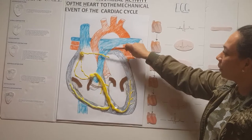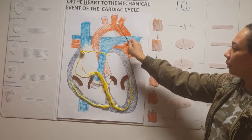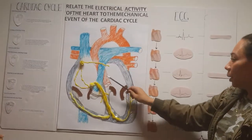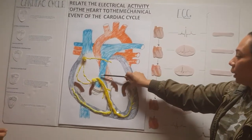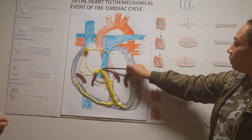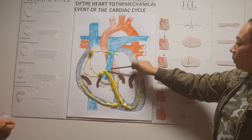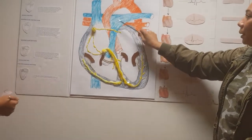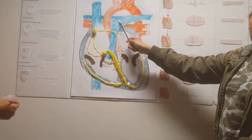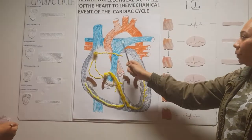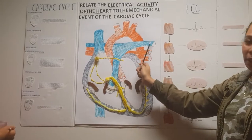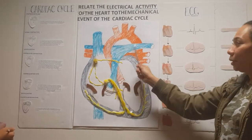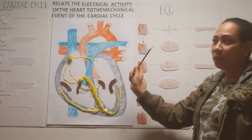The blood flows up into the aorta all the way to the body, or it goes up into the pulmonary trunk and branches off to the left or the right side going into the lungs.